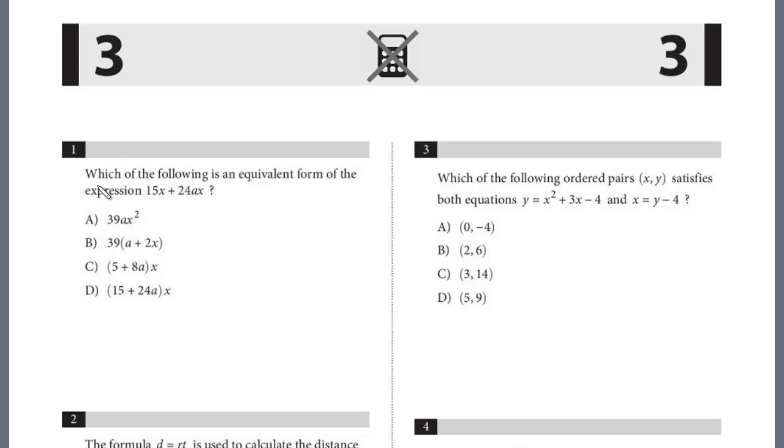Let's look at problem 1. Which of the following is the equivalent form of the expression 15x plus 24ax? Look at the choices. We know it's not A or B. This is 39. C, we'd have 5x plus 8ax, and we don't want that. The answer is D here. 15, we distribute the x, x plus 24ax. So, pretty straightforward question. It is D.